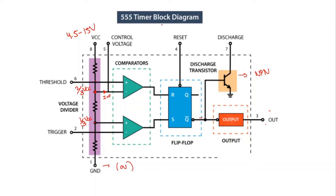Let us briefly go through the 555 timer block diagram again. The voltage divider circuit sets the reference voltage levels for the comparators. If the threshold voltage is greater than 2/3 VCC, the upper comparator output is 1; otherwise 0. If the trigger voltage is less than 1/3 VCC, the lower comparator output is 1; otherwise 0. The outputs of the comparators control the state of the flip-flop. The NPN discharge transistor helps in discharging of the capacitor.